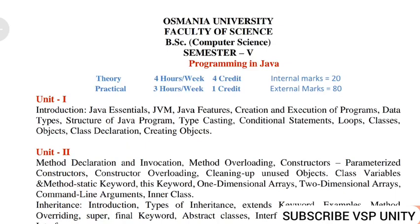First we shall see how long questions will be asked and how to attempt those long answers. In unit 1, Java features is the most important question, which will be asked frequently. There are 12 different types of features, but if you write even 8 of them, they will give you good marks.